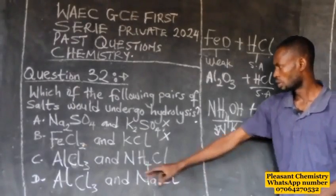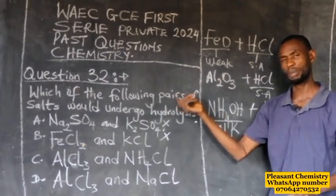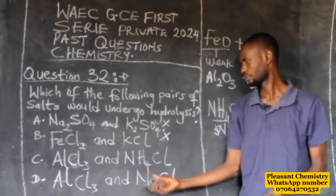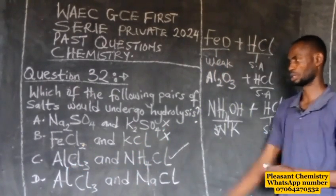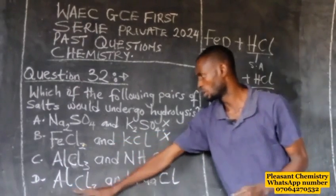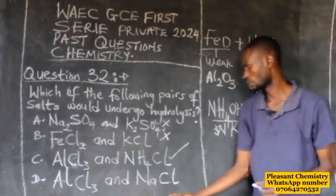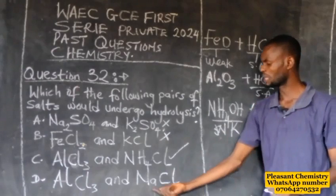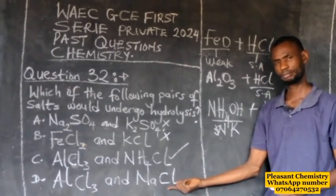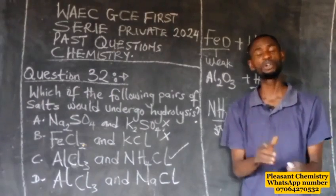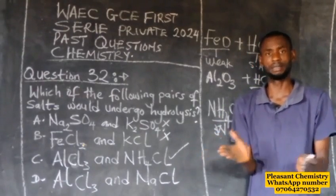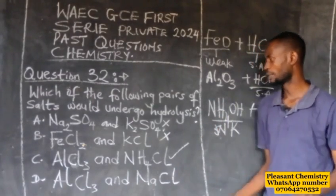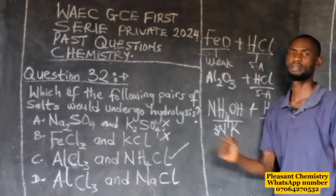We have established that both aluminium chloride and ammonium chloride undergo hydrolysis, making this pair correct — that is option C. The last pair has aluminium chloride (which undergoes hydrolysis) and sodium chloride (which does not, because NaCl is formed from a strong alkali and a strong acid). So the correct answer is option C.